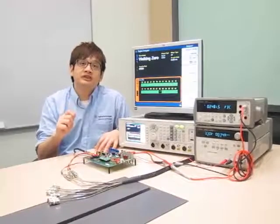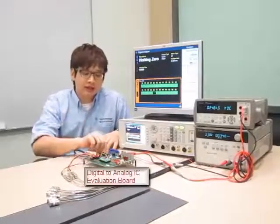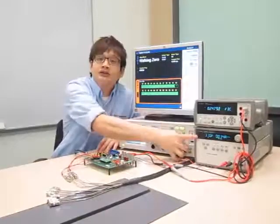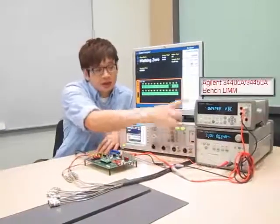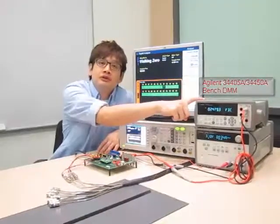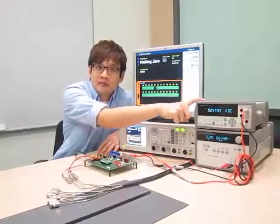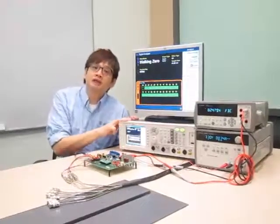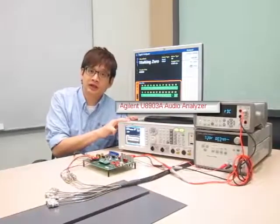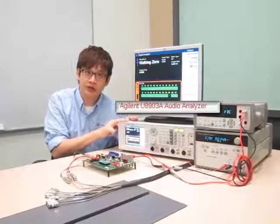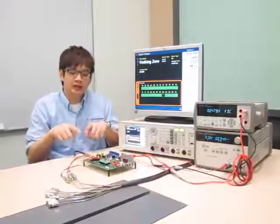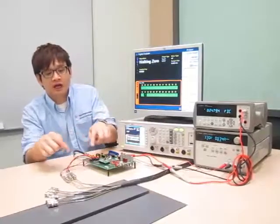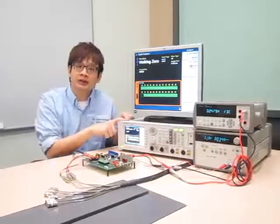Here's an overview of today's test setup. We'll be using a digital-analog IC evaluation board as our DUT today, and you will need a power supply to power on the DUT, as well as a bench DMM which is used to monitor the power supply to the DUT. And last but not least, you'll need an audio analyzer — the U8903A with digital option — to generate an SPDIF signal to the DUT, while the DUT output will be run back to the audio analyzer for analysis.